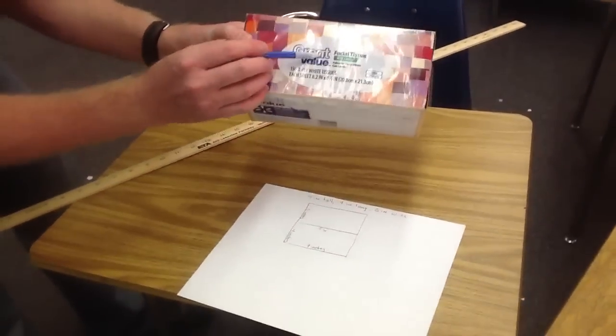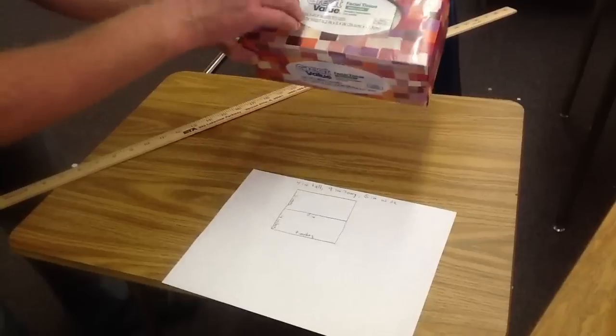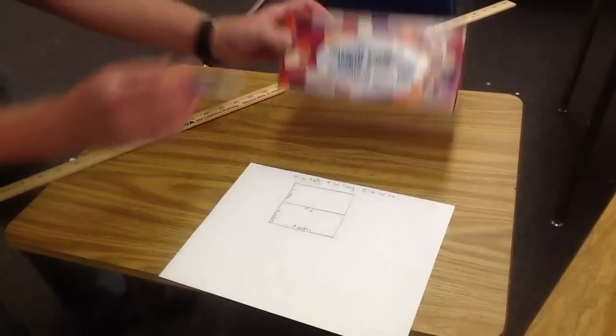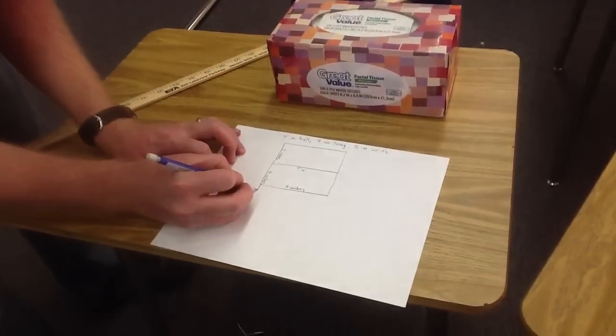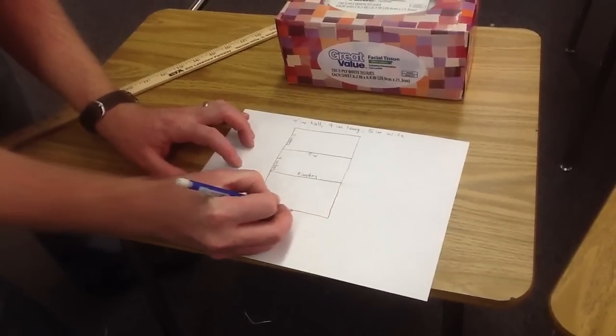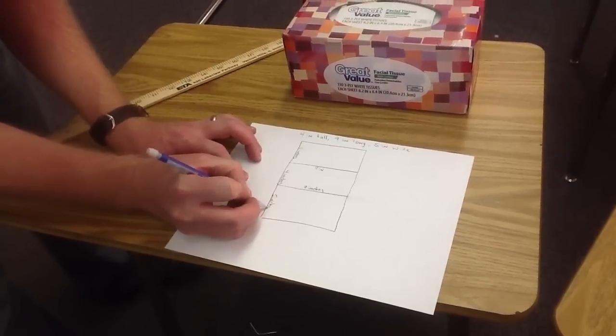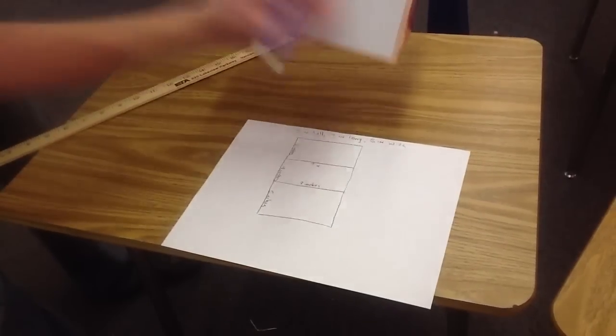Working off still this front we're going to go to the next side which would be the bottom. This should be the same size as the top. So it's going to be five inches and of course it's still nine inches long.